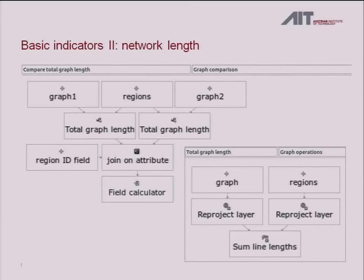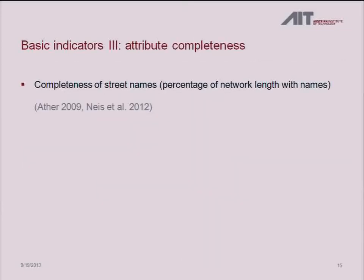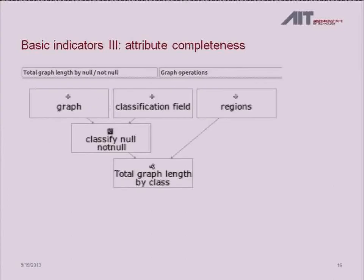Attribute completeness is also used in some studies — they check what share of streets have a name applied and what percentage have names still missing. This is easy: you only need one graph since it's not a direct comparison. You input the classification field, and the tool checks which streets have a null in that field and which have a value, then calculates length for those two groups and compares them.